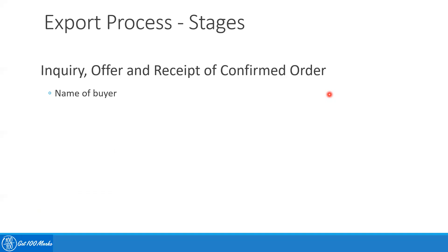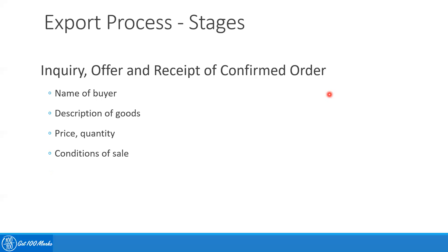First is the name of the buyer — who is the buyer. Second is the description of the goods — what are the goods, what are the specifications. Third is the price and quantity which the order is confirmed for. Fourth are the conditions of sale, which can include guarantees, delivery terms, and post-sale service — the overall terms and conditions of the sale.